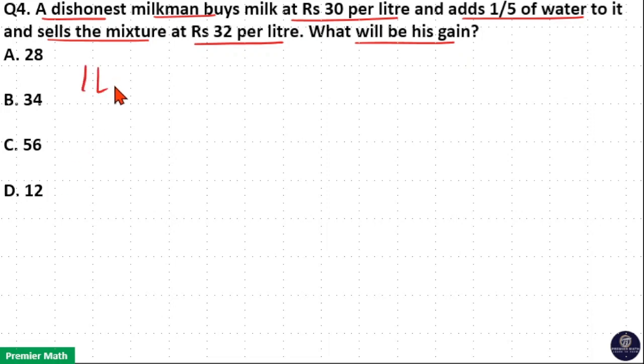Here, 1 litre milk solution after adding 1 by 5 of water solution will become 1 plus 1 by 5, that is 6 by 5 litre milk water solution.